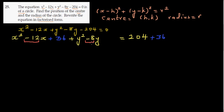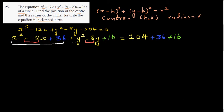For the y terms, half of negative 8 is negative 4, and the square of negative 4 is 16. So we add 16 to both sides in the y gap. Now both x and y expressions have become perfect squares.